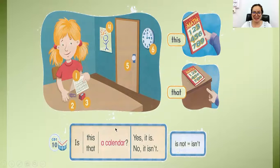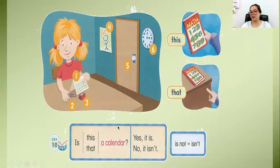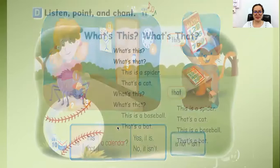'This' — holding an item. 'That' — pointing at an item. Is this a calendar? Yes, it is. Answer 'yes, it is' if positive, and 'no' if it is not.